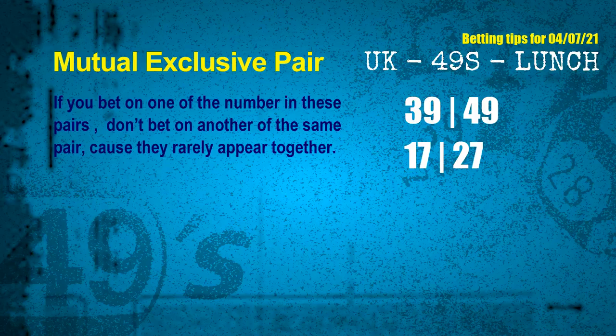Now we have some following ones and ball colors. Here are tips to increase hit odds, such as mutual exclusive pairs. These numbers in a pair both match the following ones and colors, but according to thousands of results, they rarely appear together — meaning if you bet on one of them, don't bet the other in the same pair. The mutual exclusive pairs for next draw are: first pair, 39 and 49; second pair, 17 and 27.